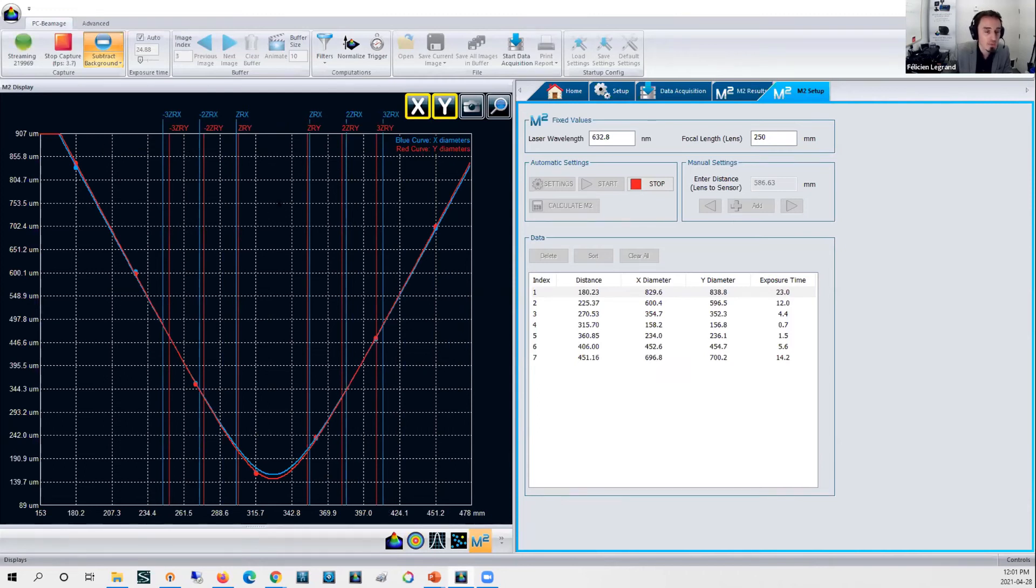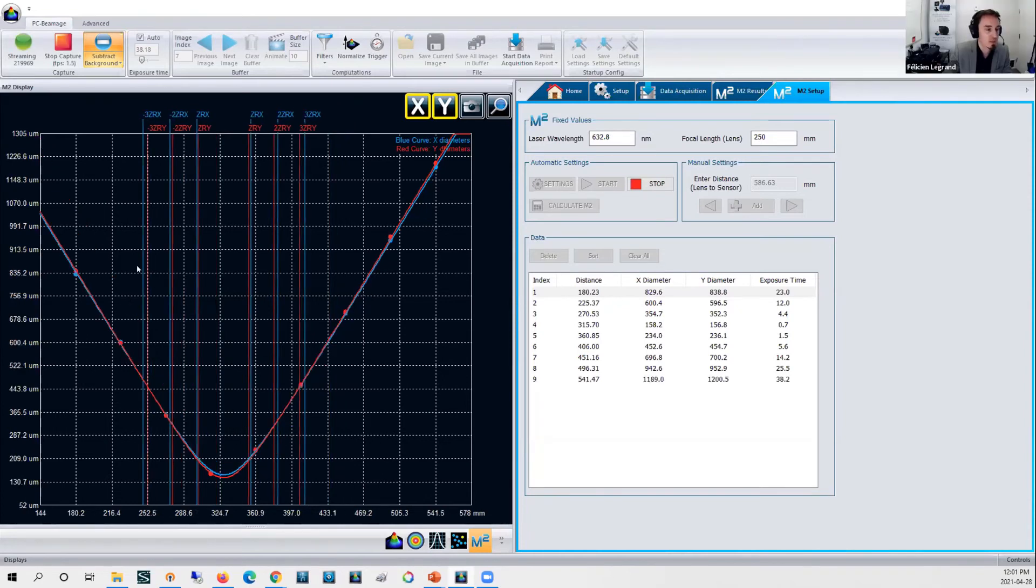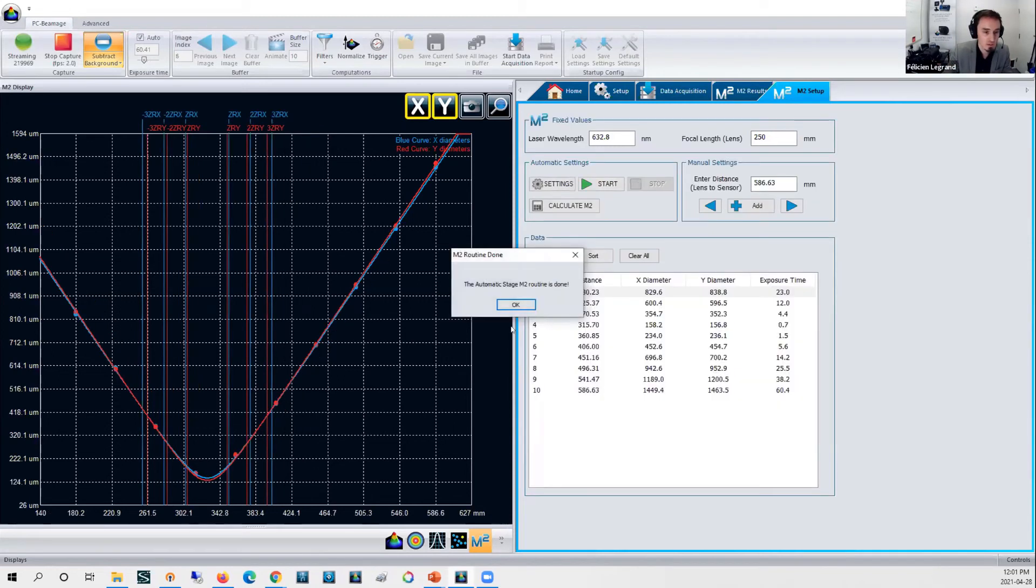In the red I have my Y diameter measurements and in blue this is the X diameter measurements. Through that I'm starting to see already where is my waist, where is the smallest beam dimension. The smallest size I can achieve with my laser beam is here and it's telling me my Rayleigh ranges, minus two, minus three. This will give me a really good overview of my beam propagation behavior. The automatic stage M² routine is done.